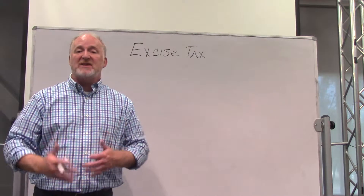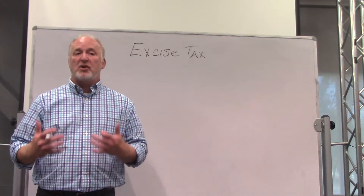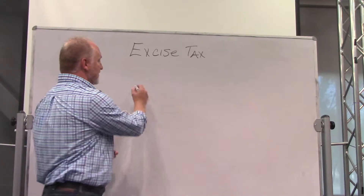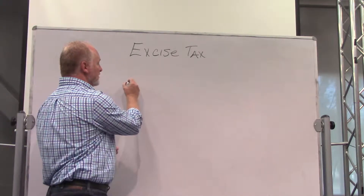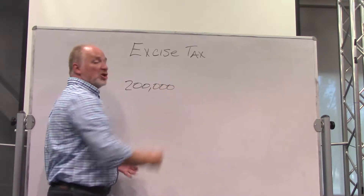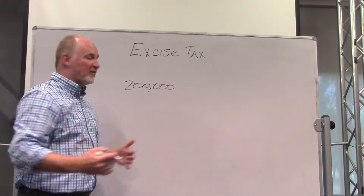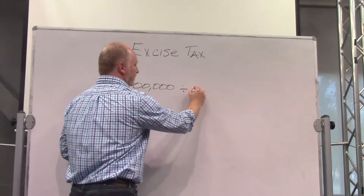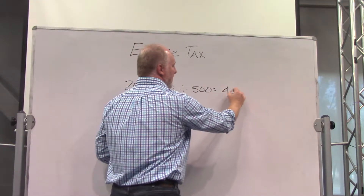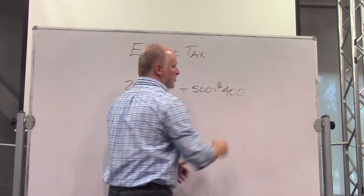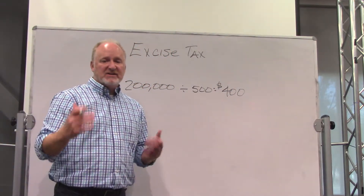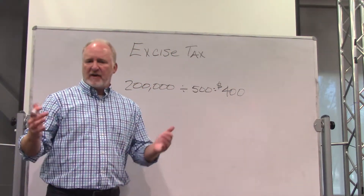If the sale price is evenly divisible by $500, this is a very simple problem. A sale price of $200,000 — you would simply divide $200,000 by $500, and you would see that the excise tax is $400. And of course, that's a $400 debit to the seller.